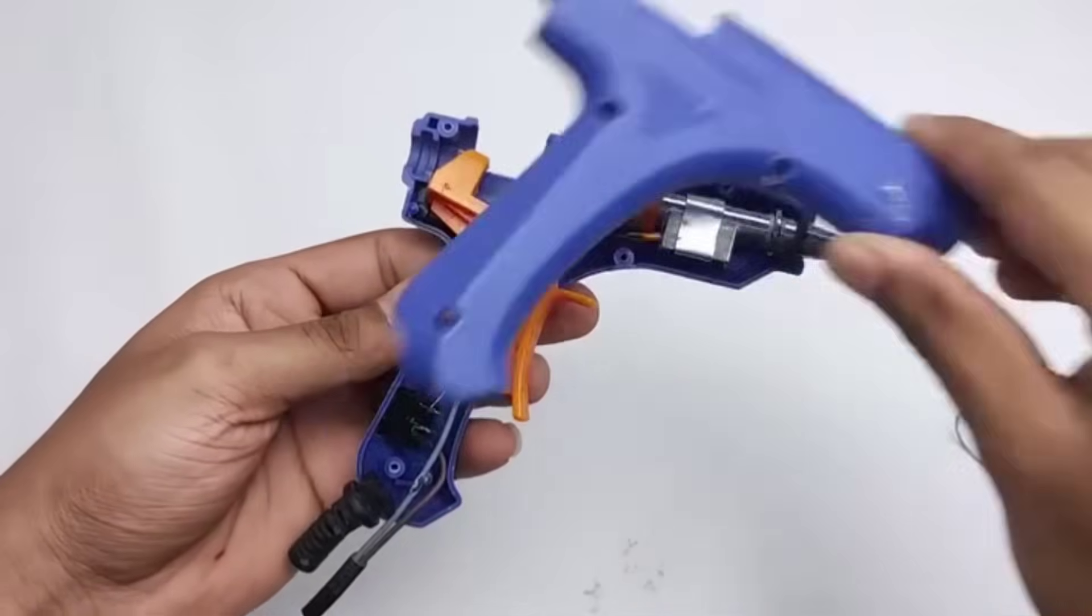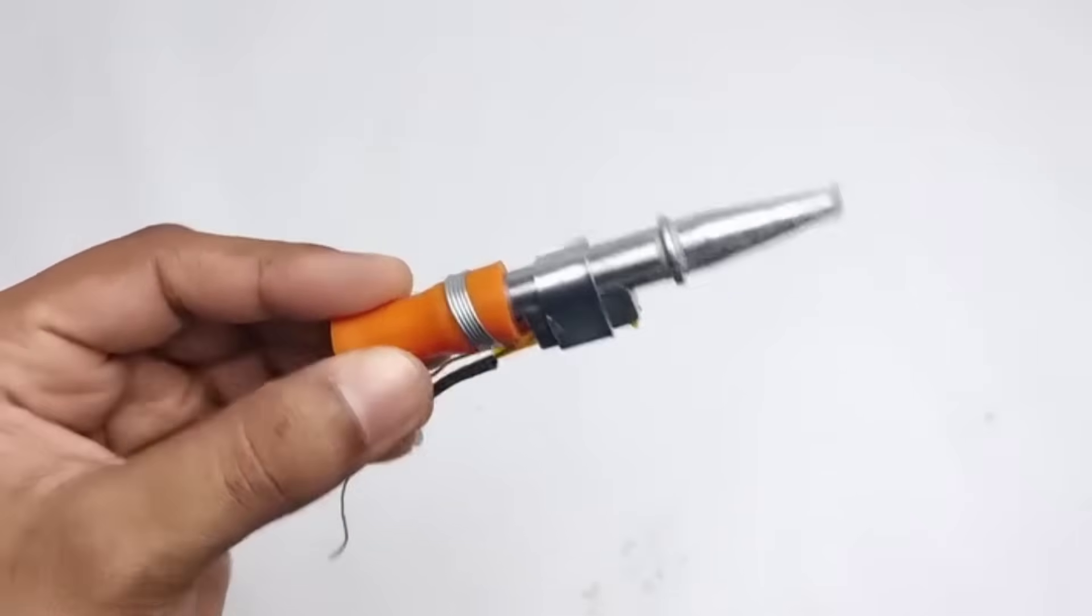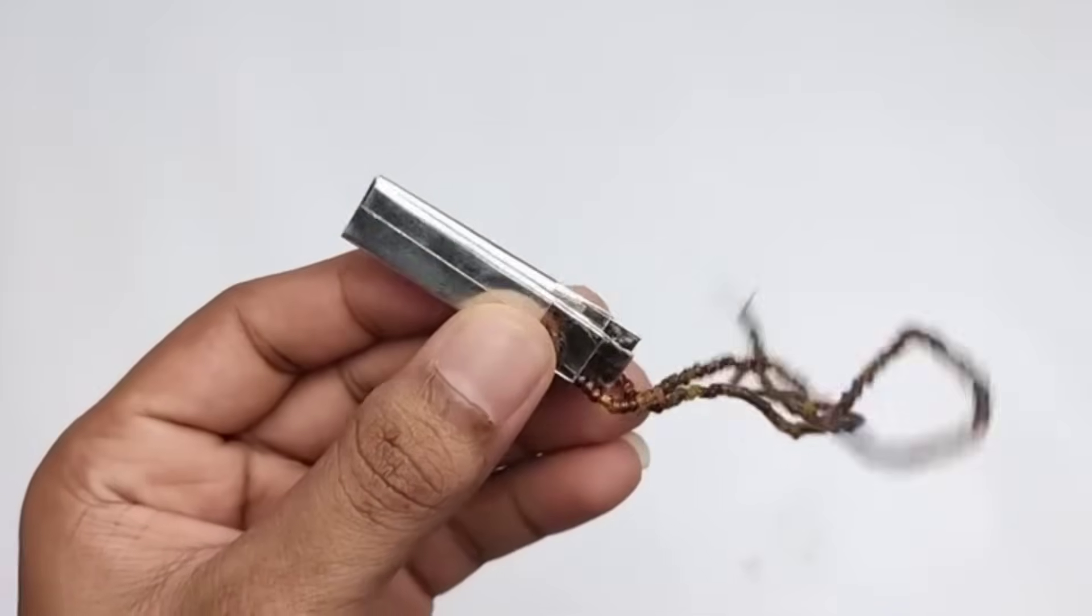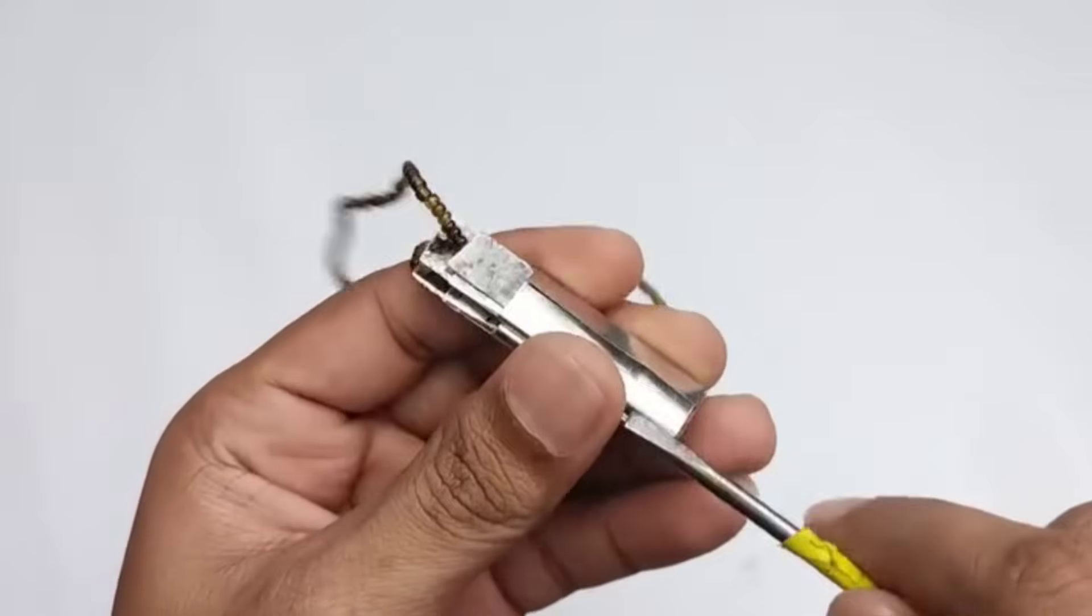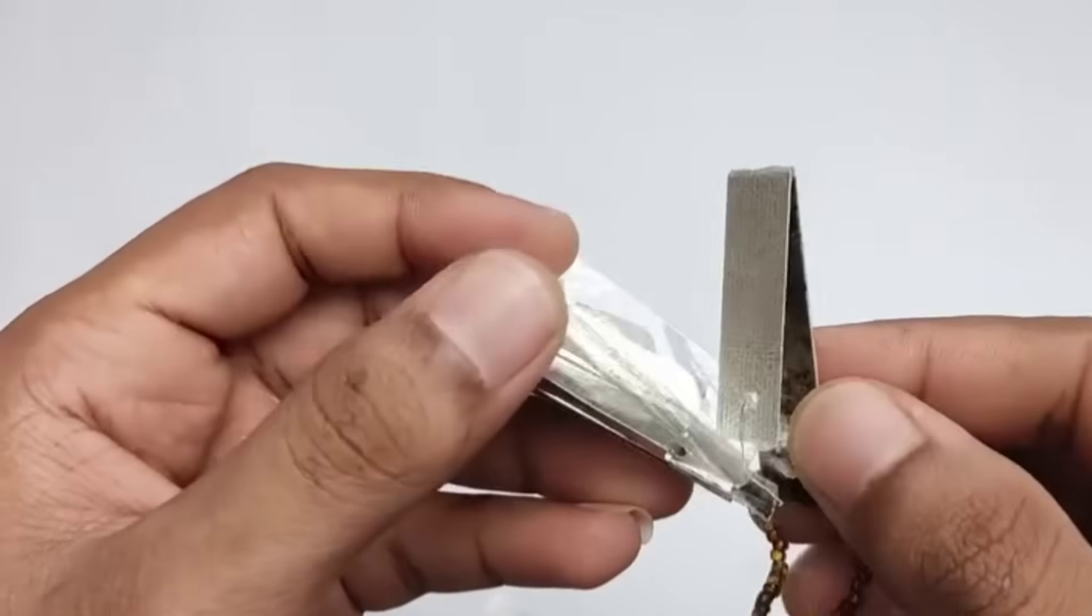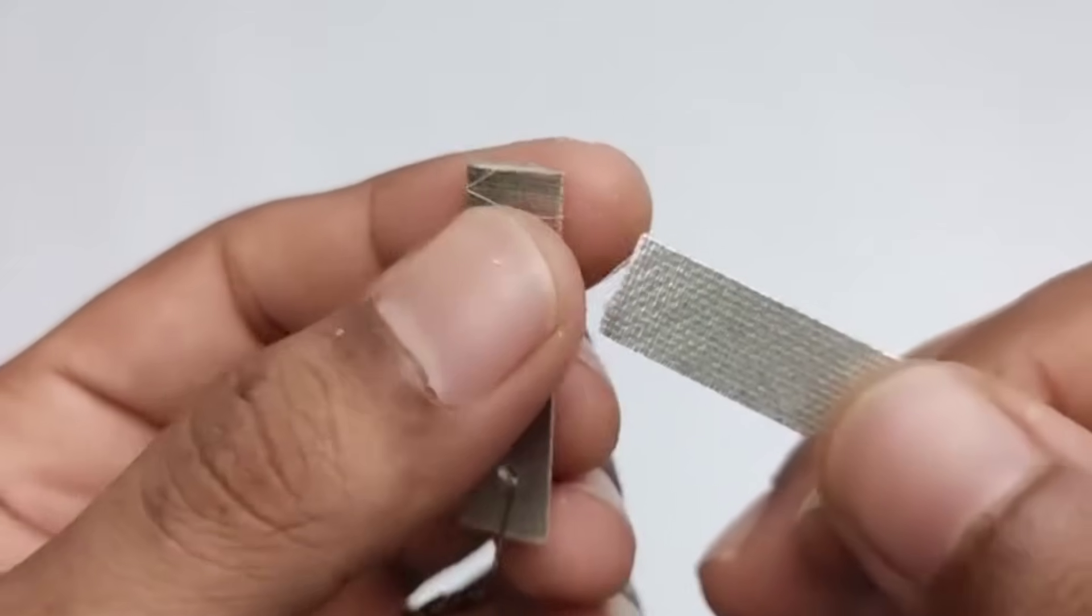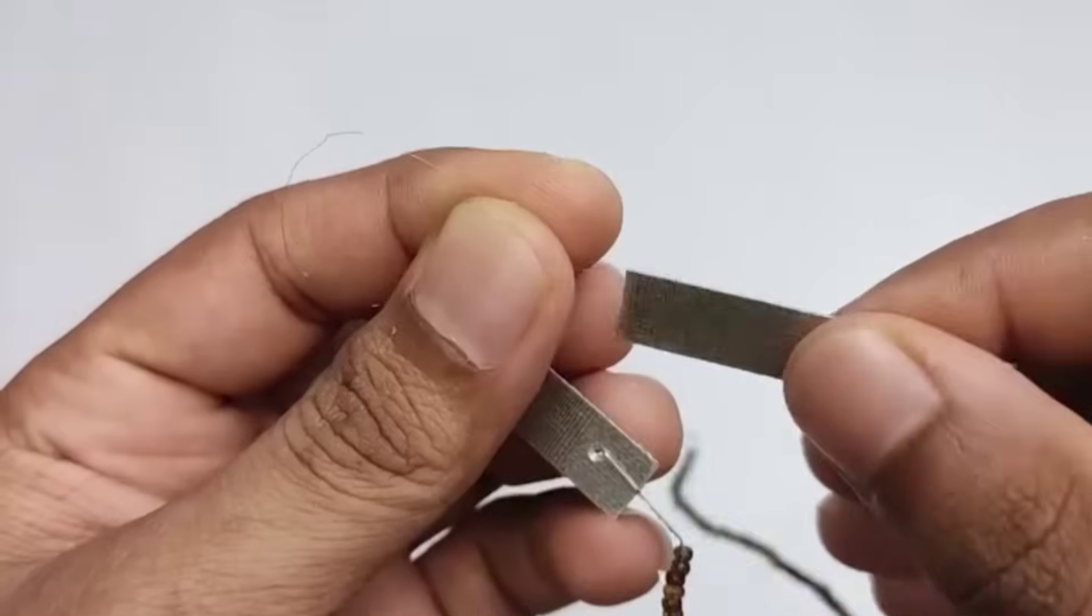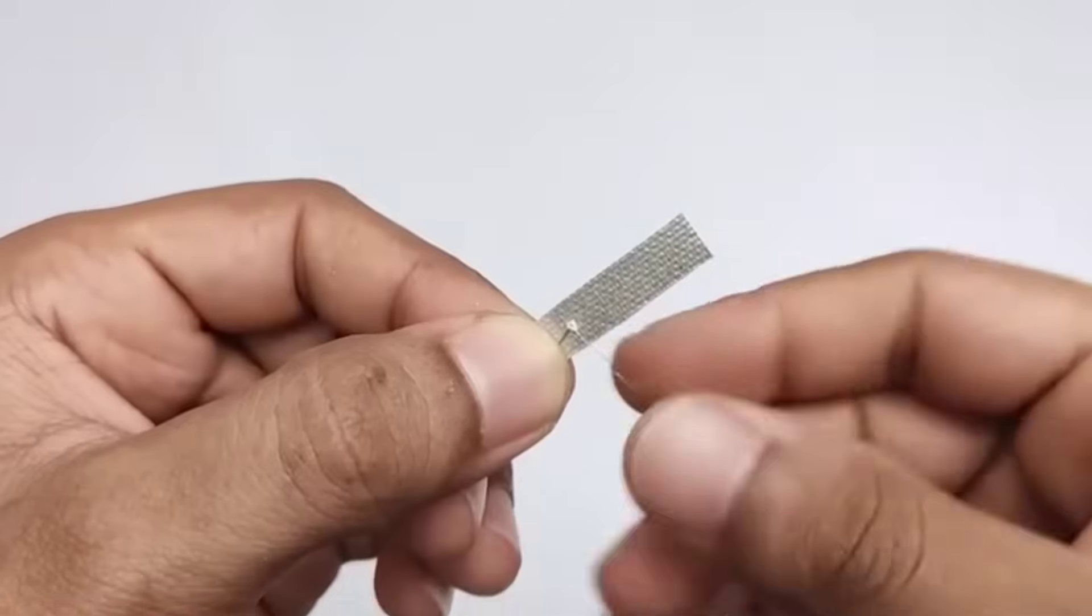Hey friends, today I am building a rechargeable glue gun, a compact 12V model. I want to show you what's inside, why the heating element uses nichrome wire, and how to handle that wire very carefully if you ever need to replace it. I'll walk you through what I'm looking at, what to watch out for, and why safety must come first. Let's get into it.